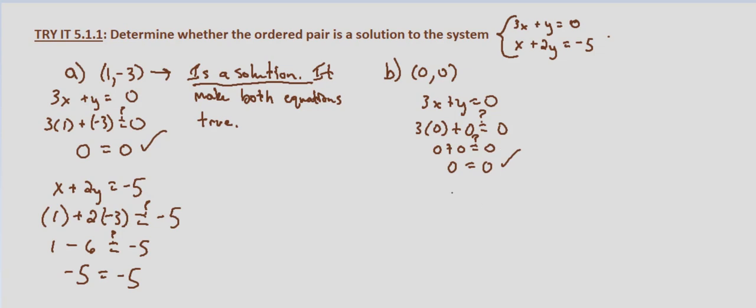Now what about our second equation? x plus 2y equals negative 5. So does 0 substitute for x, plus 2 times 0, does that equal negative 5? Well, that's just 0 plus 0, which is 0. Zero does not equal negative 5.